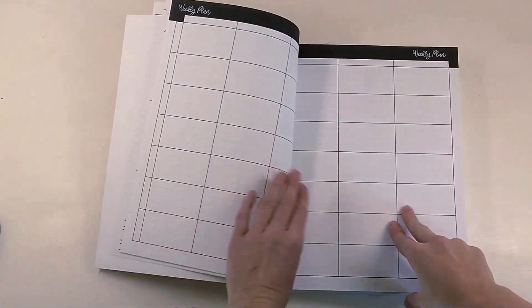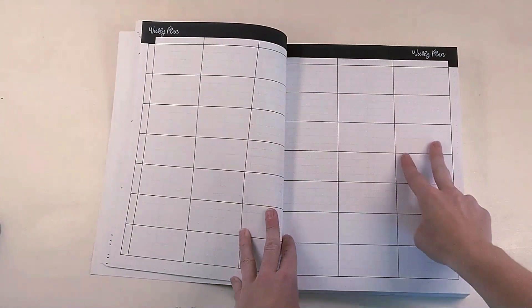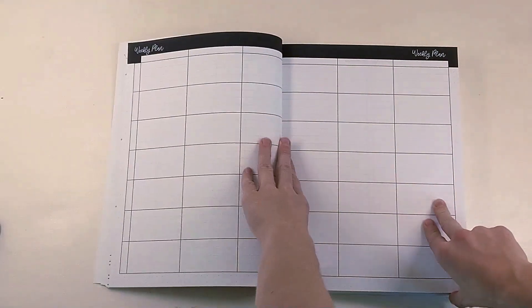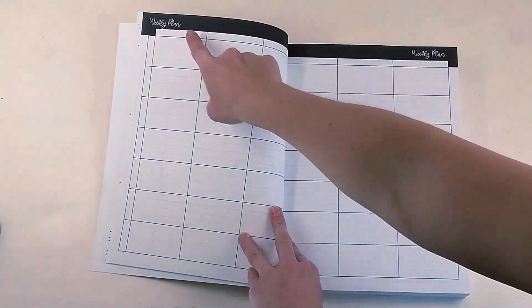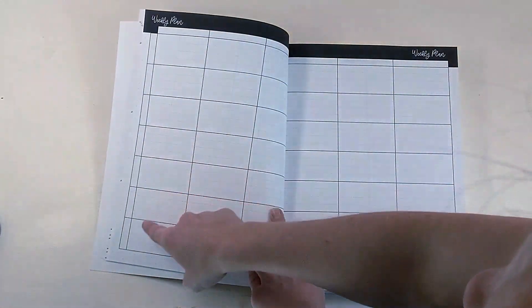And we go to the weekly plan, which is awesome. I love that they took advantage of both pages on this, and they left these blank, the subjects. So there are six rows for subjects and up to seven columns for days.